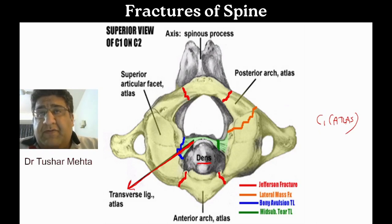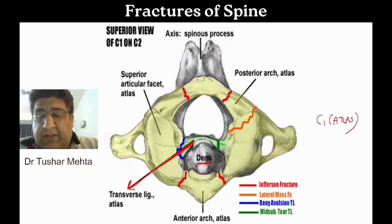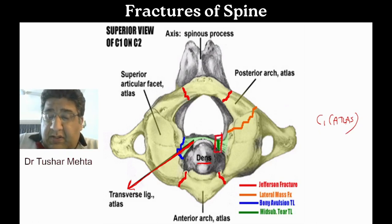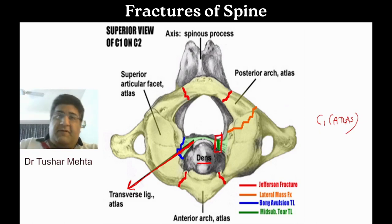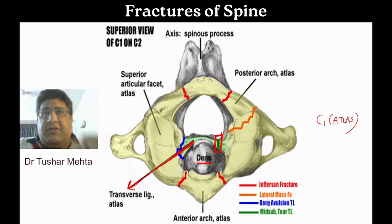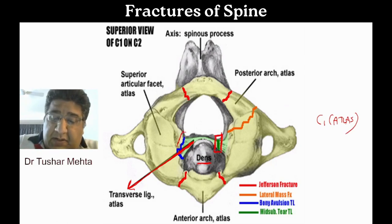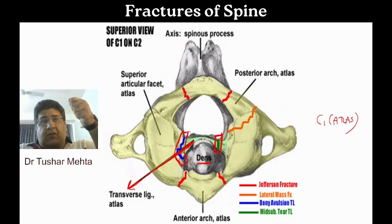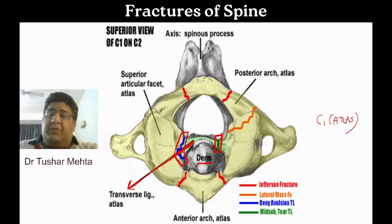I can show you the fracture of C1 — the atlas — in different views. The first category is the mid-substance tear of the transverse atlantal ligament. The second type is avulsion of this ligament, where the ligament gets avulsed from its bony insertion.